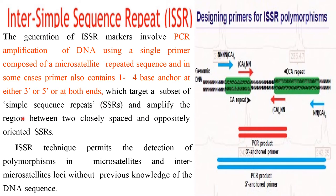This targets a subset of Simple Sequence Repeats (SSR) and amplifies the region between two closely spaced and oppositely oriented SSRs. The ISSR technique permits the detection of polymorphism in microsatellite and inter-microsatellite loci without previous knowledge of the DNA sequence.